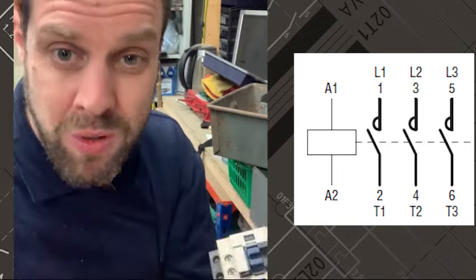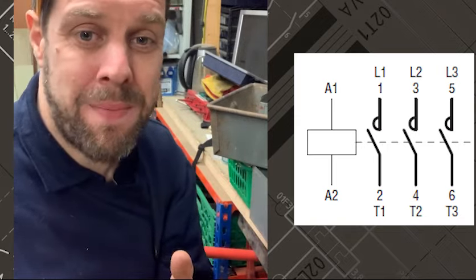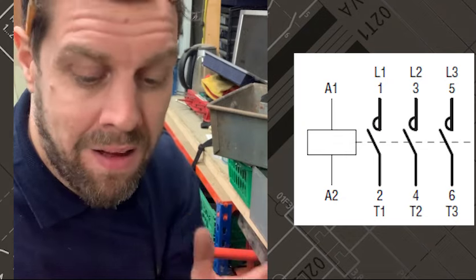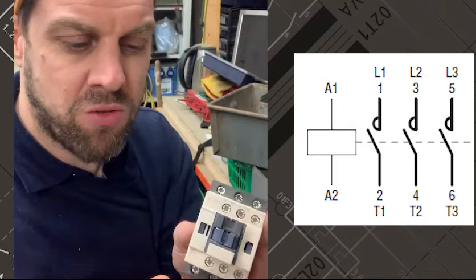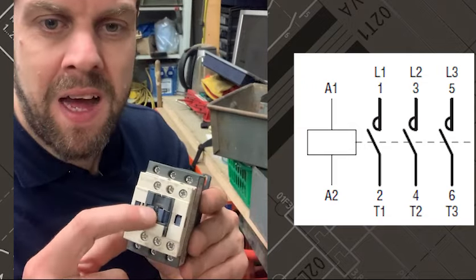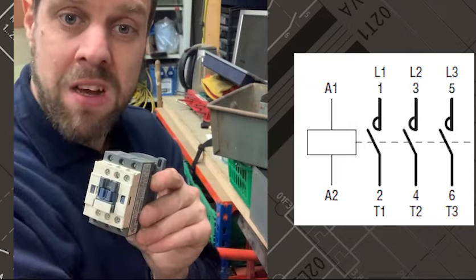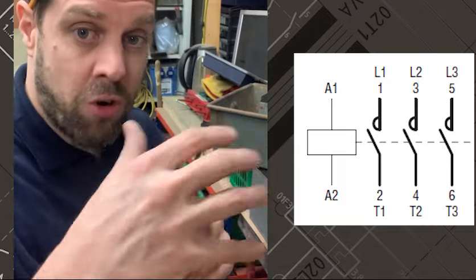Then you put the contacts in here that are big that run the motor or something and it will switch it. It is that simple. Think about it: say you've got three million lights and you can't turn them on with one light switch. You make your one light switch switch the coil on, and then you put as many contacts as you need to switch on all your lights.